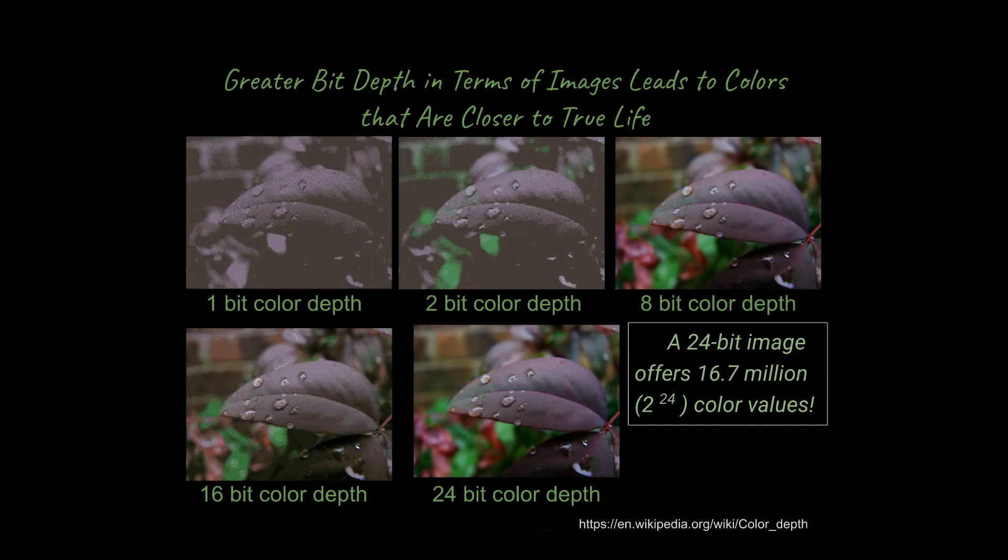It's either purple or it's black. And that's all you have with a one bit color depth because you're either a one or a zero for all of these pixels in here. And as you get higher and higher color bit depth, you can see more and more true colors of what's going on here.